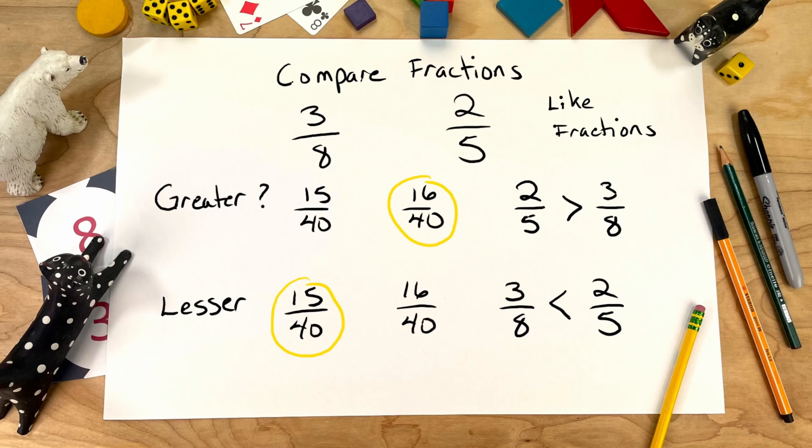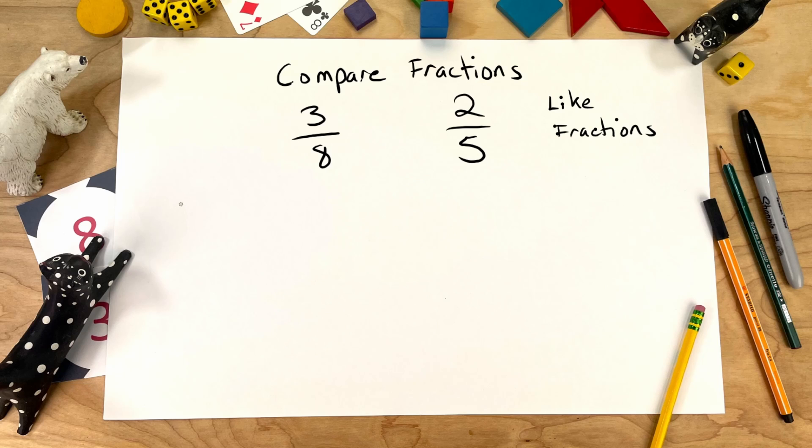Let's try something more. We could ask which one is closest to one whole. Let's use a number line to help us. Put one whole here. Could be anywhere. Let's put what we know about our fractions above on this line. We know that 3 eighths is the same thing as 15 fortieths. Not quite a half.